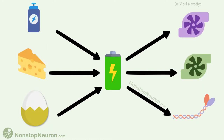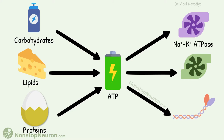A similar system works in our body too. Here, the sources of energy are various carbohydrates, lipids, and proteins. ATPs are the common point. And enzymes like the sodium-potassium ATPase pump, calcium ATPase pump, and myosin kinase are some of the instruments that run our body. The energy from different nutrients is transferred to a common point — the ATPs — and the ATPs are then used by different enzymes.